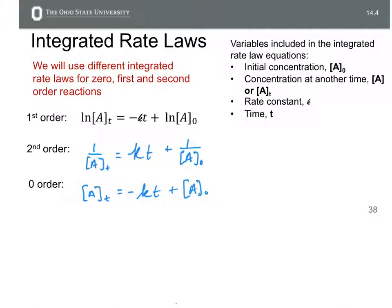And so again, our variables, we've got initial concentration A sub zero, concentration at another time, you may see A sub t or you may just see it as concentration of A forgetting the subscript t, the rate constant K, and time which is lowercase t. And the way I've written out each of these expressions is in the form of y equals mx plus b. That's on purpose.